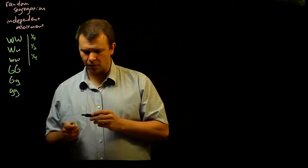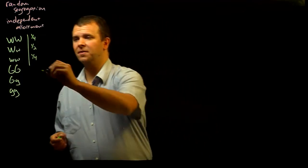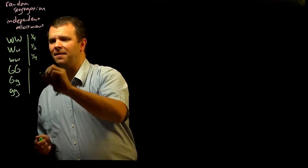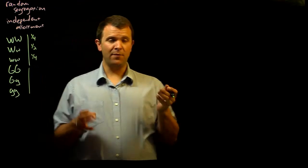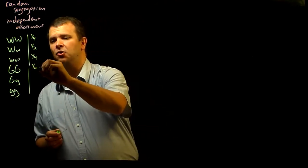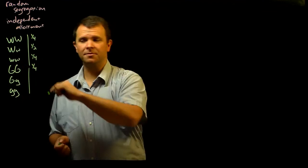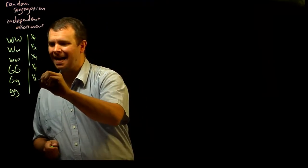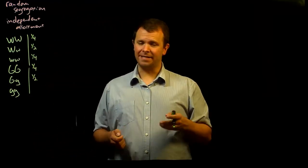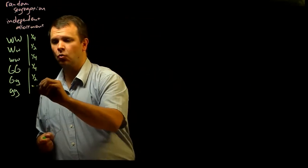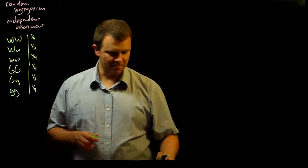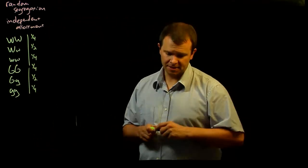Similarly, for yellow seeds versus green seeds, we also expect, if we cross a hybrid, one quarter of them to be yellow homozygous dominant, one half of them to be yellow heterozygous, and one quarter of them to be green homozygous recessive.